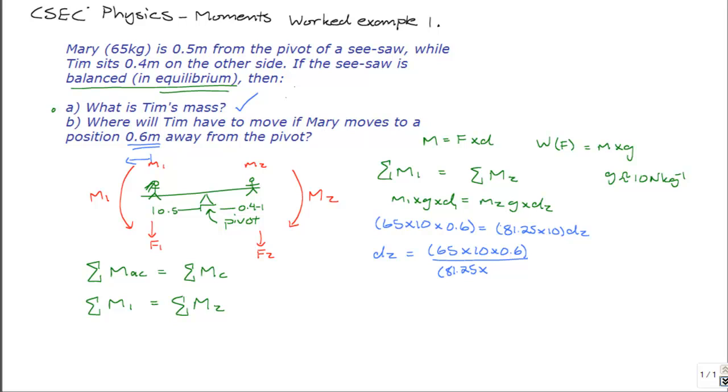Notice again that gravitational acceleration g is in the numerator and denominator. It's on both sides of the equal sign, so it can be left out, it can be cancelled from this step. So, we work out a value for d2 of 0.48 meters, which is the answer to our question.